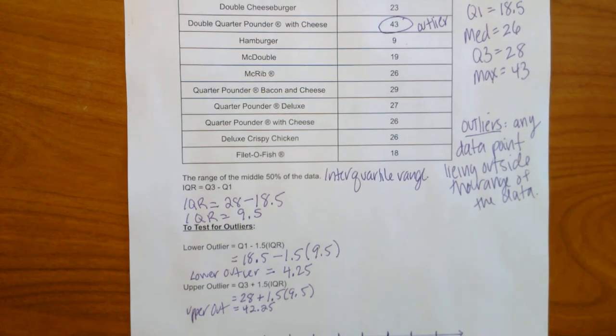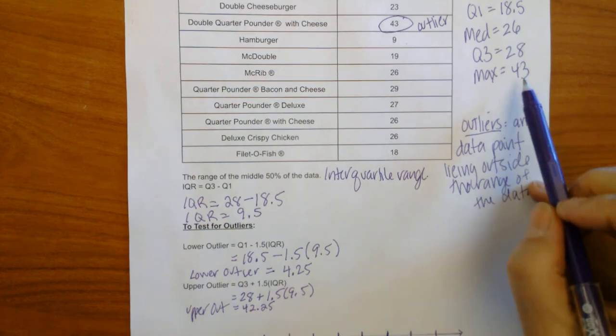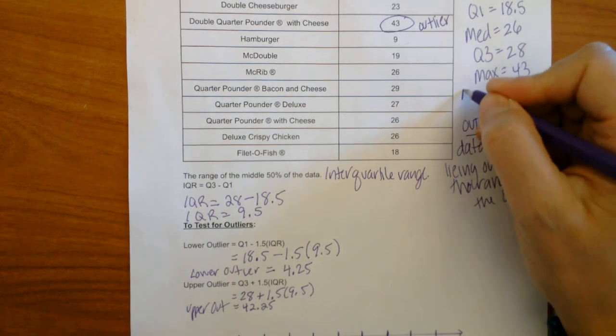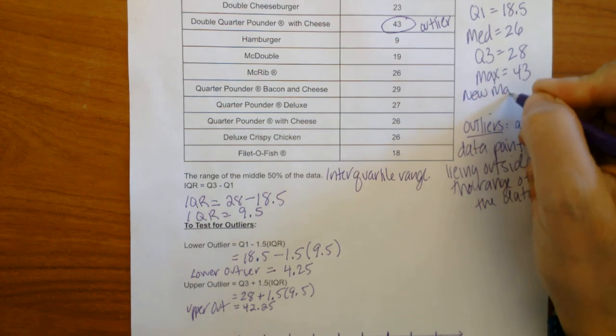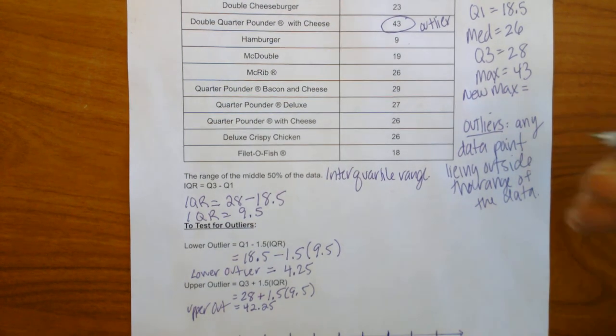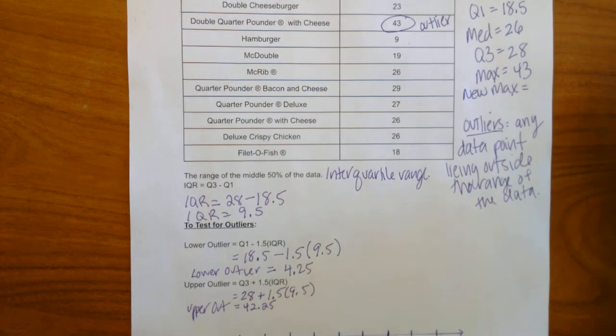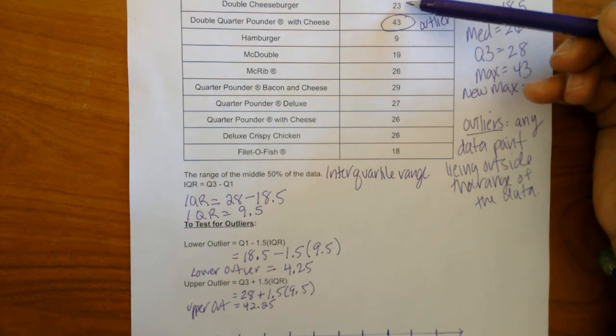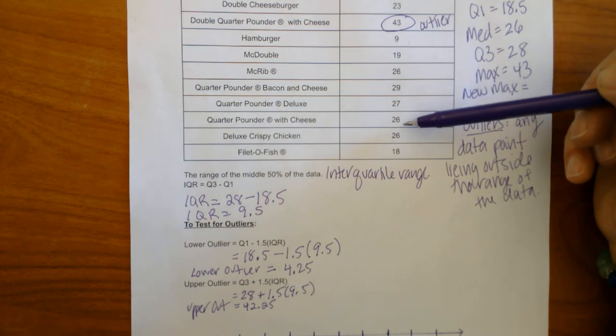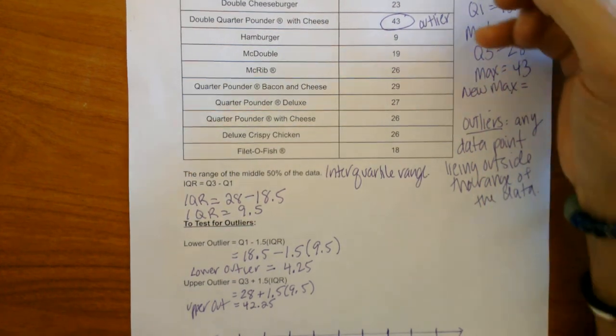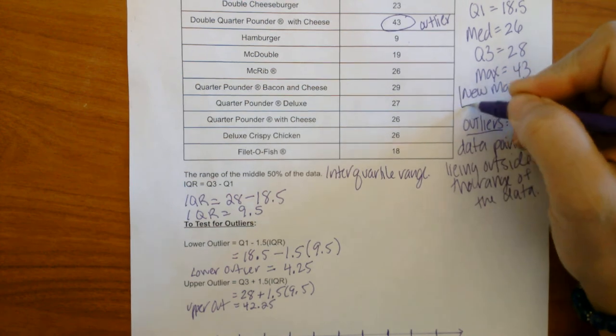So we're going to have to modify our box plot. This maximum now is an outlier so we need a new max. And the new max is going to be the next biggest number. So what is our next maximum number here? I think it's going to be 29. I don't think there's any other number. Nope. So our new max is 29.